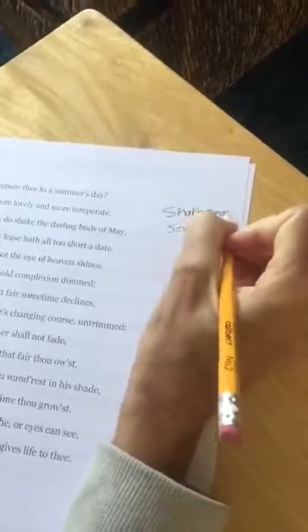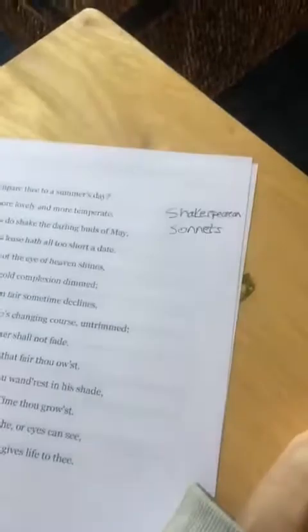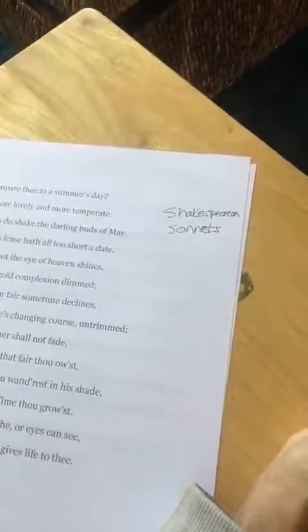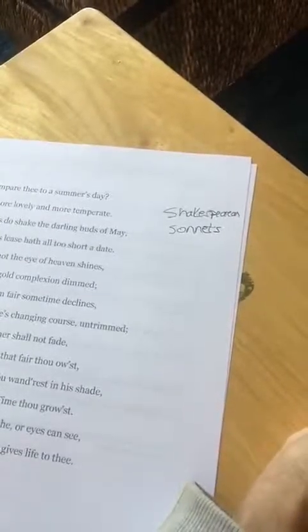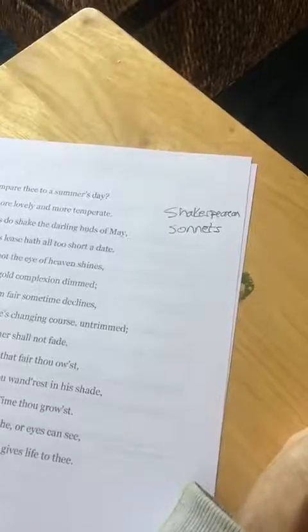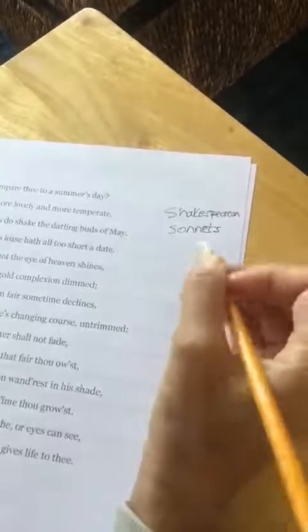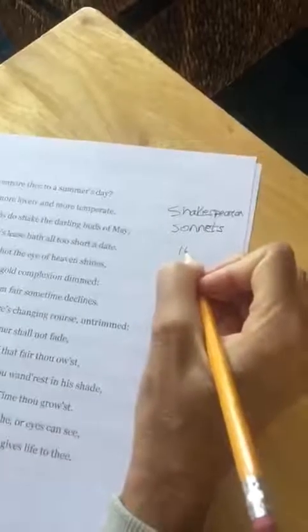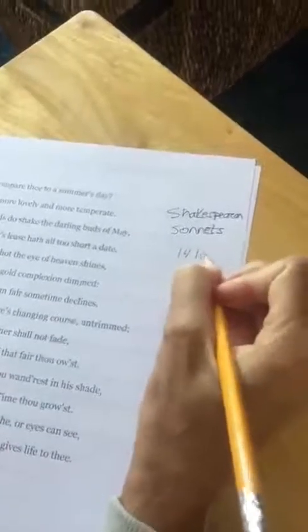And I just wanted to go over really briefly what makes something a sonnet. A sonnet has a very specific structure. The first thing to know, of course, is that sonnets are always 14 lines.